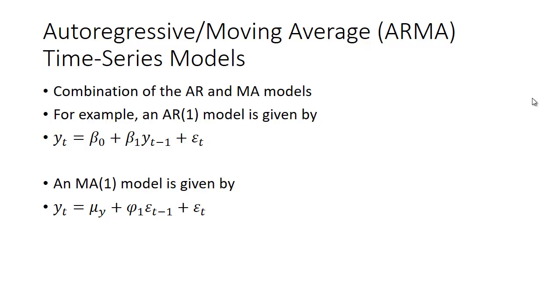It's a combination of the AR and MA models. To recap, the AR(1) model is given by y_t = β_0 + β_1*y_(t-1) + ε_t, where you have y in time period t as a function of some constant term β_0, plus some coefficient times y lagged one period, and there's an error term because we're not going to estimate this perfectly.